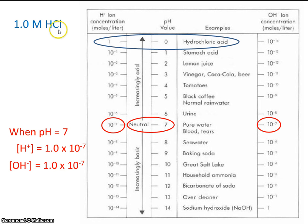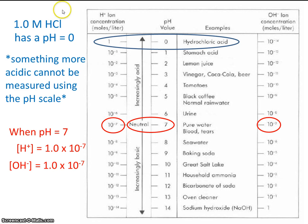Once again, hydrochloric acid at 1 molar has a pH of 0. But we know we've dealt with things more acidic than this. So something more acidic cannot be measured using the pH scale.